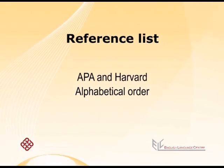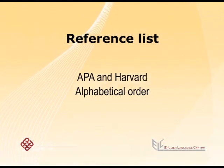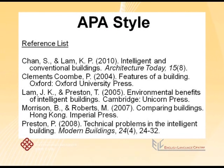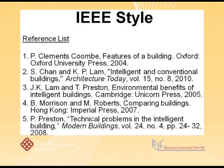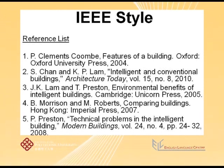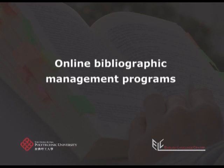Finally, the reference list. Each style has small differences, but remember, for APA and Harvard they are in alphabetical order — from A to Z. Here is an example. In IEEE and Vancouver, they are in numerical order. The first reference in the essay is labelled number one, and that is number one in the reference list. You can see an example here. To make sure your reference list and in-text references are accurate, you can use online bibliographic management programs available in the PolyU library. But remember to also double-check against the ELC referencing style guide for the specific style you are using.